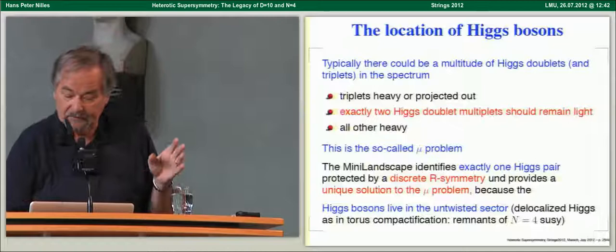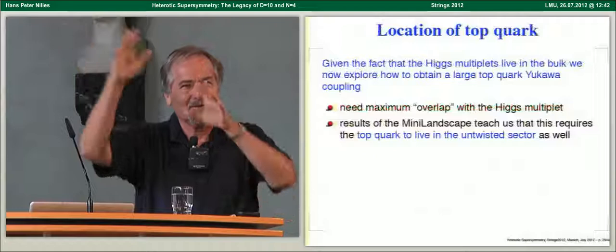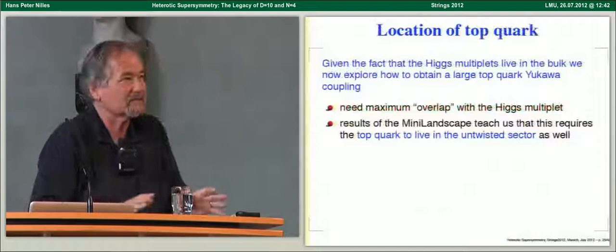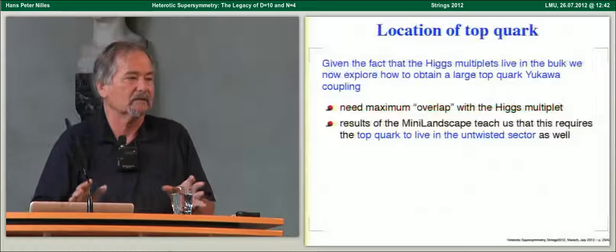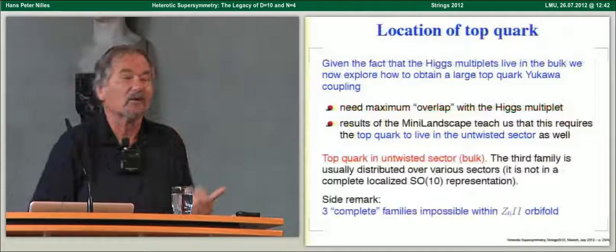So the Higgs bosons live in the untwisted sector. Fields in the untwisted sector fully feel the extra dimensions and experience the SO(6) Lorentz group, which is the source of the R-symmetry. The heavy top quark also turned out to be in the untwisted sector, because that gives maximal overlap with the Higgs bosons. In many of the models there is only one trilinear Yukawa coupling, so the top quark lives in the bulk as well.